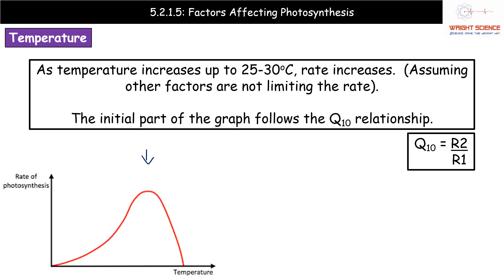The initial part of the graph follows the Q10 relationship. Q10 equals 2 is a great example — when the temperature increases by 10 degrees Celsius the rate doubles, hence Q10 equals 2. To calculate Q10 we take the rate at the higher temperature (R2) divided by the rate at the lower temperature. Simply read two temperatures 10 degrees apart from your graph and divide the higher rate by the lower rate.